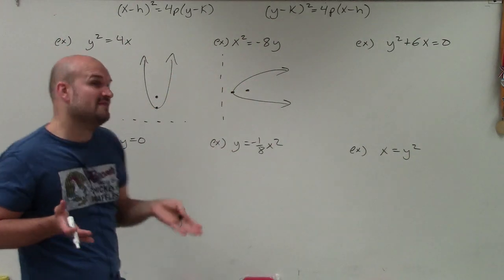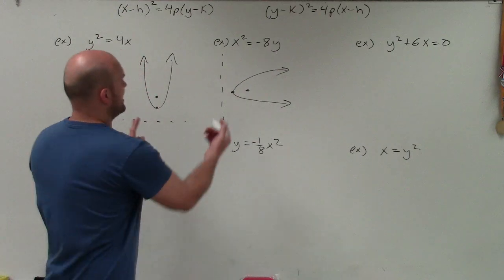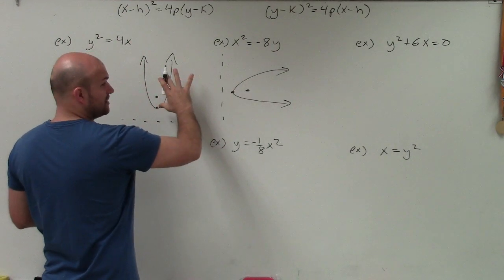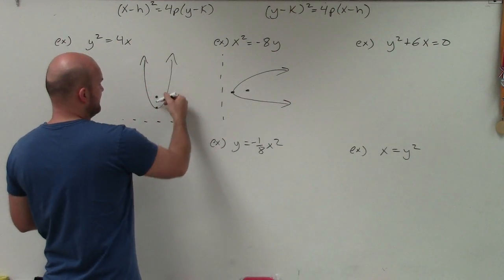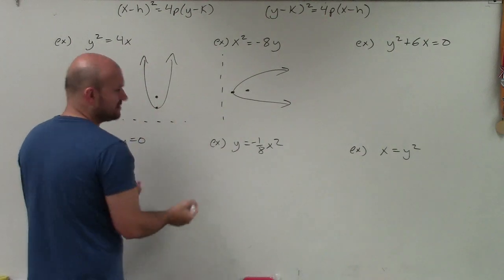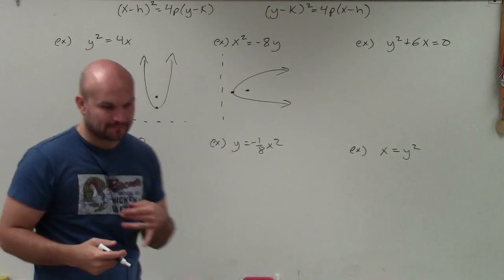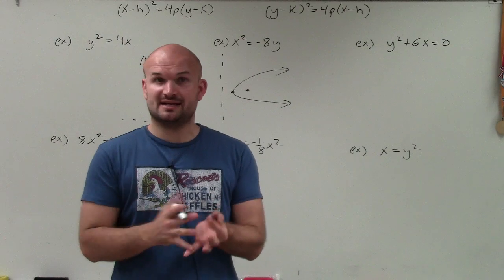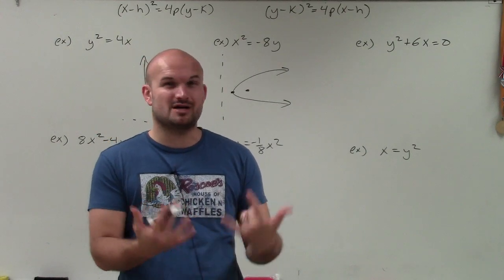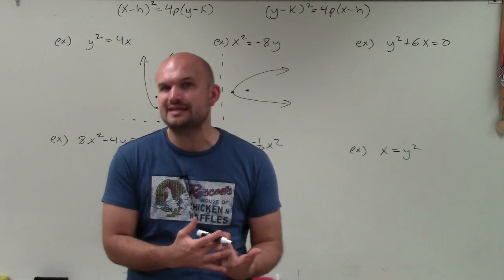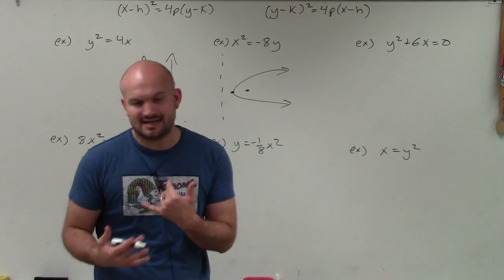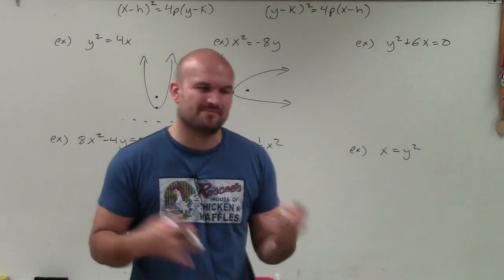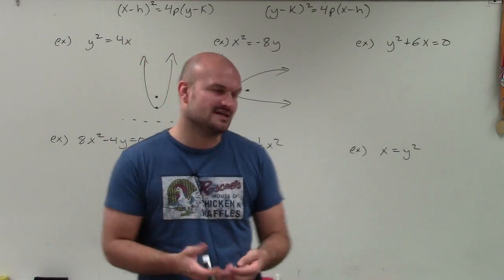Remember, if the value of p is negative, that means the focus is going to the left, so the parabola would open to the left, and if the focus is going down, the parabola is going to be opening down. That's really important to understand, because even though I'm going to find the focus and the directrix, I'm also going to sketch the information. I'm going to give a rough sketch every time I do conic sections.